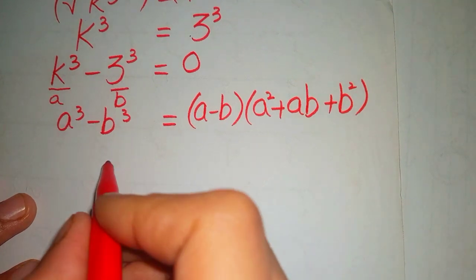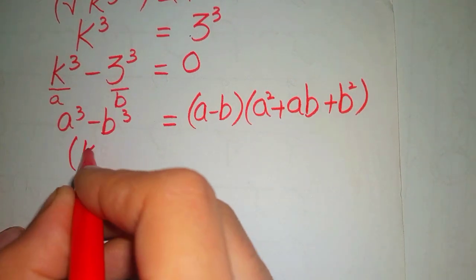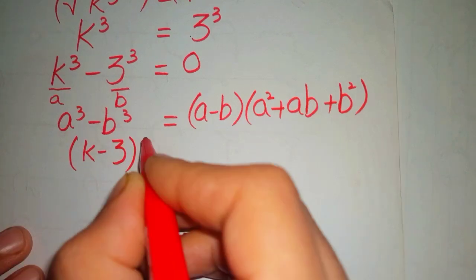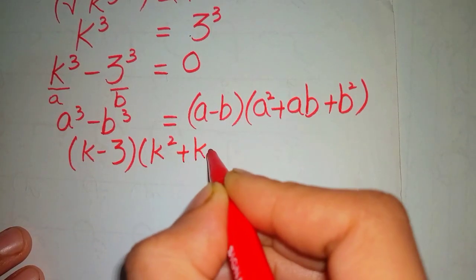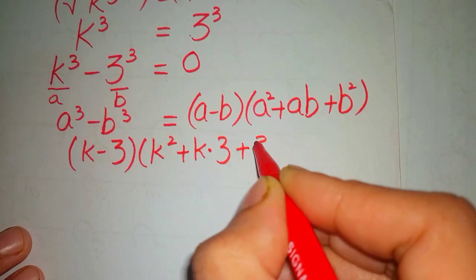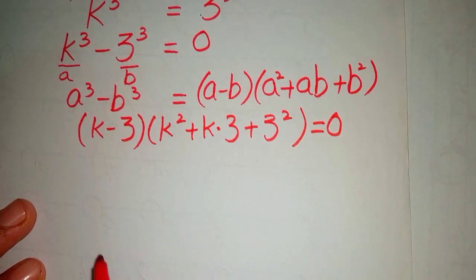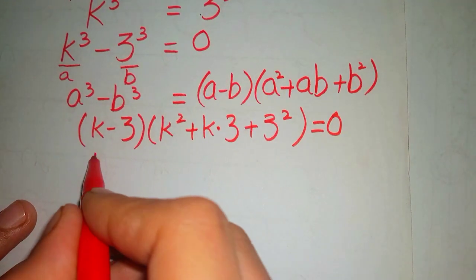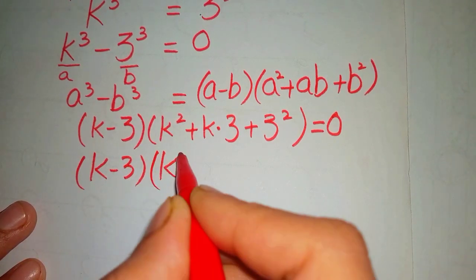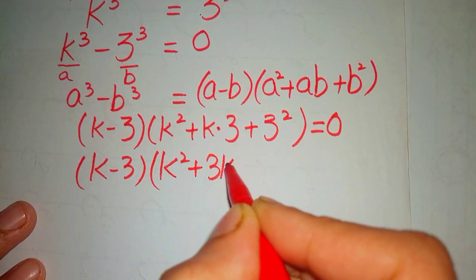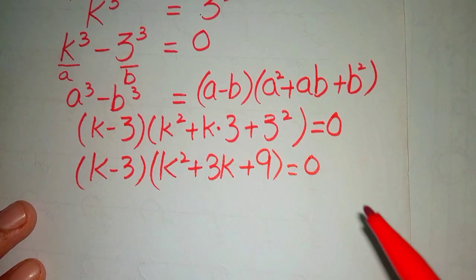Now we substitute all values of a and b into this formula, giving us: k minus 3, into k squared plus k times 3 plus 3 squared, equals 0. This simplifies to k minus 3, times k squared plus 3k plus 9, equals 0.